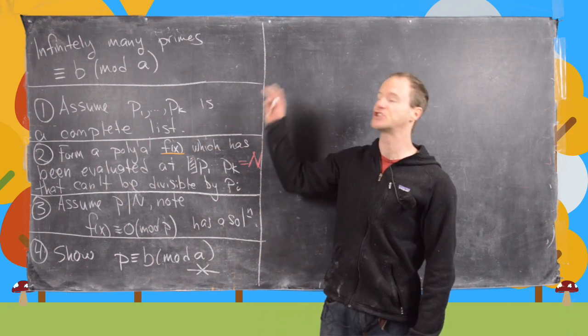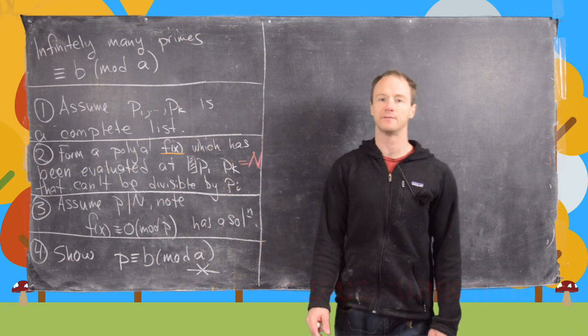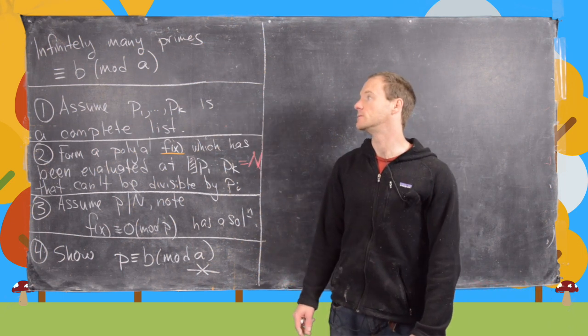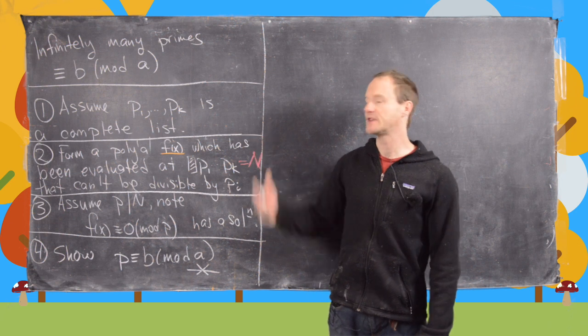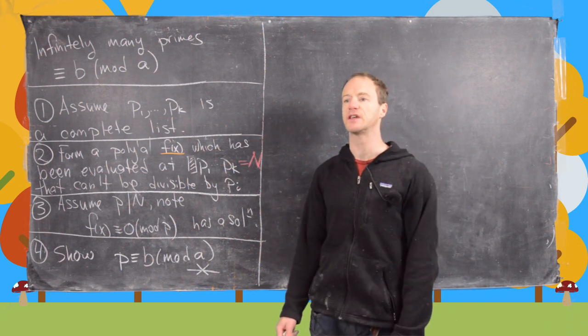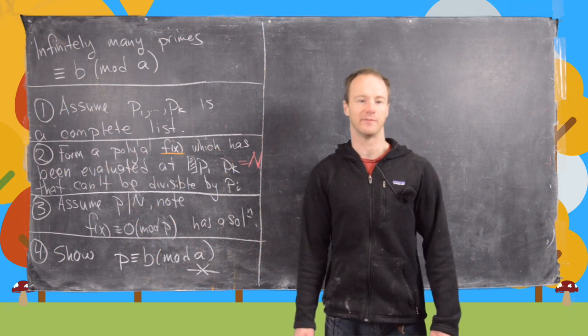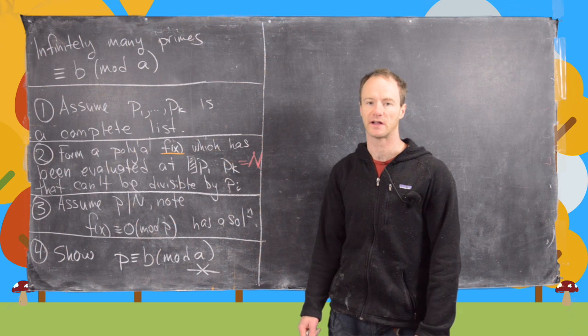In this video we're going to talk about a general strategy for proving that there are infinitely many primes of the form B mod A. Obviously B and A have to be relatively prime here, and there's a hugely powerful theorem called Dirichlet's theorem that says there are infinitely many primes of this form if these two are relatively prime.